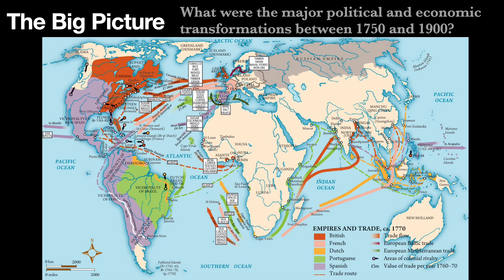The Qing Empire in China was at its height politically and economically. The Qing ruled over territory in East and Central Asia, and their influence extended into Southeast Asia. Chinese silks, porcelain, and tea were all being exported from China and sent around the world. And even in 1750, the Mughal Empire had just started to lose control over its territory in South Asia, but the economy of India was still incredibly prosperous.